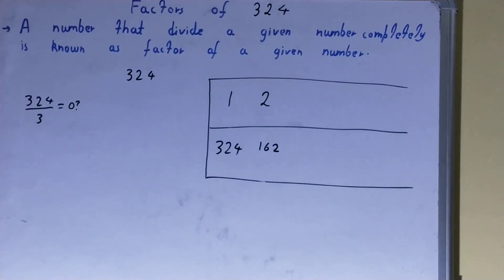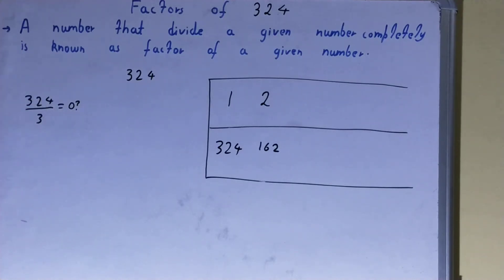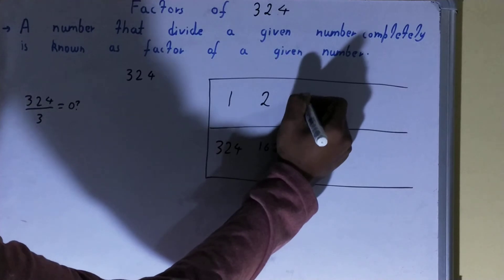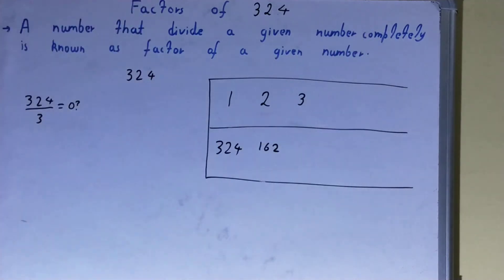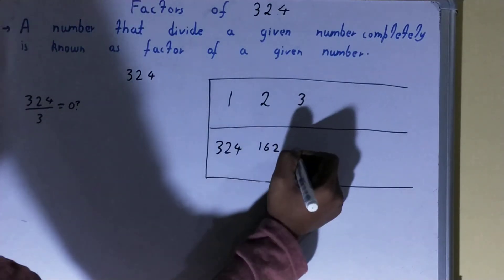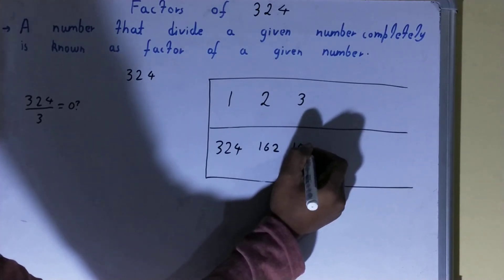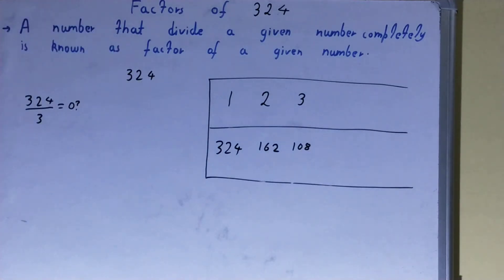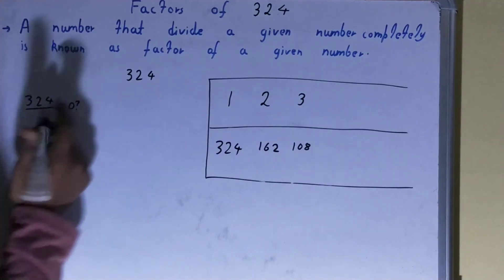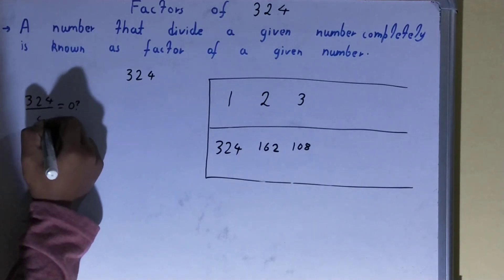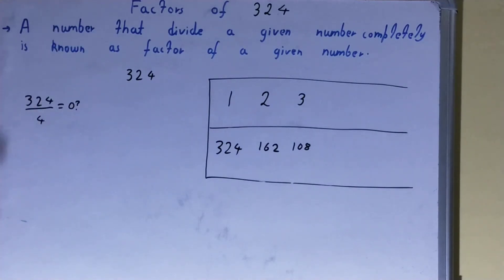After 2, we check with 3. Is 324 divisible by 3? Yes, it is. So 3 is a factor, and 3 × 108 = 324, so 108 will also be a factor.